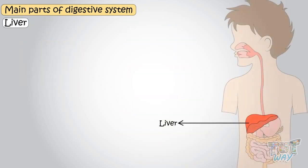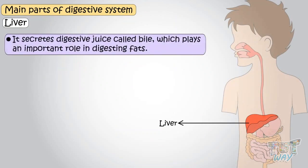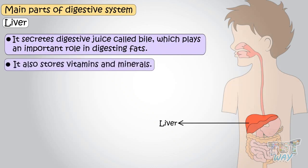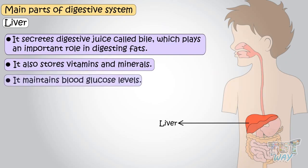Liver — the liver secretes digestive juice which is called bile. Bile plays an important role in digesting fat. It also stores vitamins and minerals. It is also helpful in maintaining blood glucose levels and many more functions.